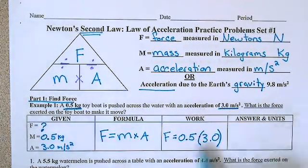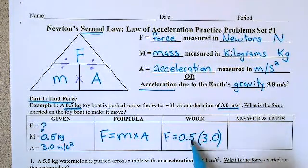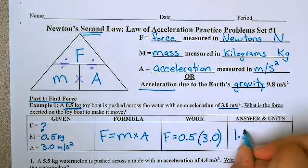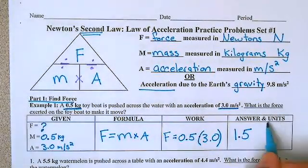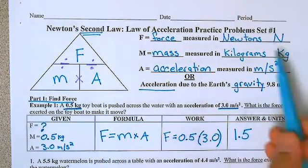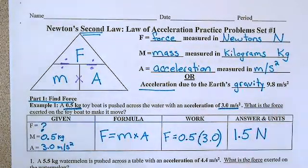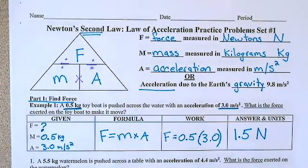So now we're going to multiply this together to get our answer. So 0.5 times 3 is going to give us 1.5. And because we are looking for the force, force is measured in newtons, so the unit here is going to be N. You can either write N or you can write the full word out.